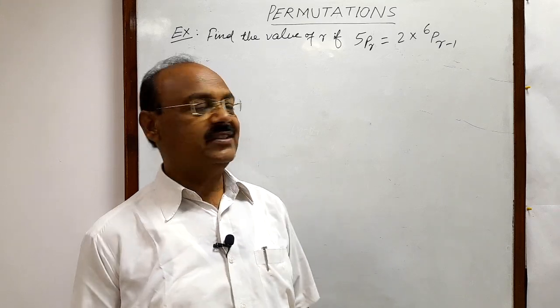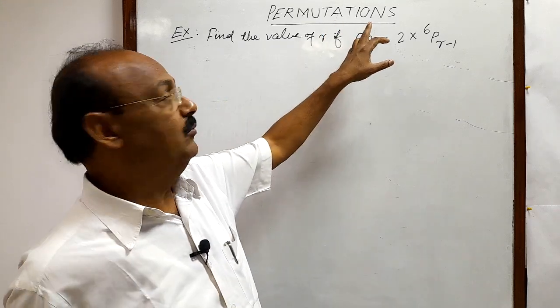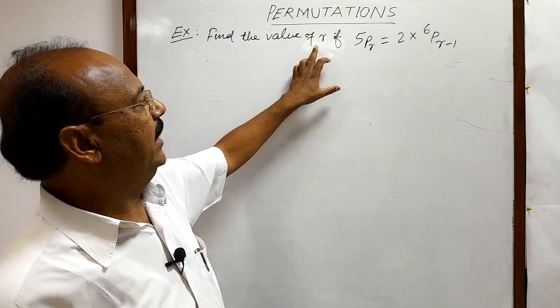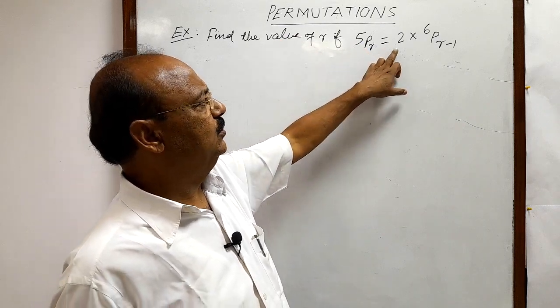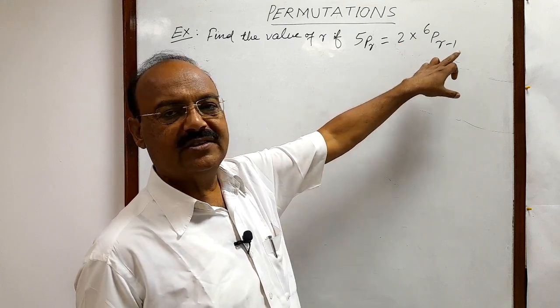Welcome students. Today we have to discuss this problem from the topic permutation. Here the problem is find the value of r if 5Pr is equal to 2 into 6P(r-1).